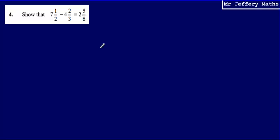This is question four from a series of videos taking a look at the Edexcel practice papers. Here we're asked to show that 7½ minus 4⅔ is equal to 2⅚.